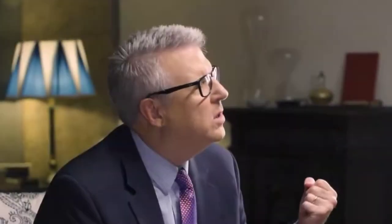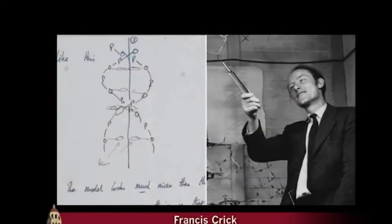Why do you use the term digital? Well, because in computer science we have characters, zeros and ones. This is Crick, 1957. It's the sequence hypothesis.